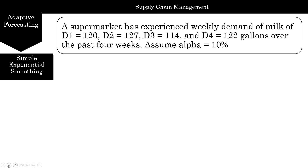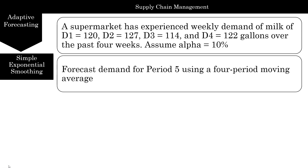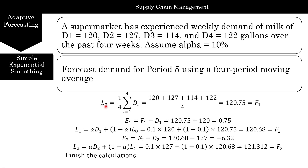Using the same milk example — 120, 127, 114, and 122 gallons, with alpha at 10% — L0 starts at 120.75, which is also the forecast for period 1. The error is 0.75 since actual demand D1 is 120. Then L1 equals alpha times D1 plus (1 minus alpha) times L0: 10% of 120 is 12, plus 90% of 120.75, giving L1 equal to 120.68, which becomes F2. You continue similarly for L2 and beyond.